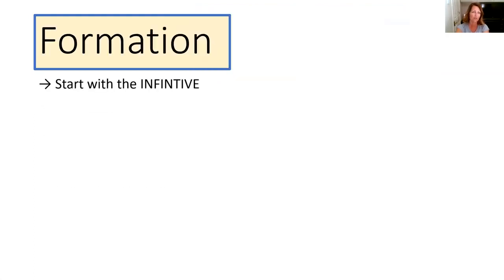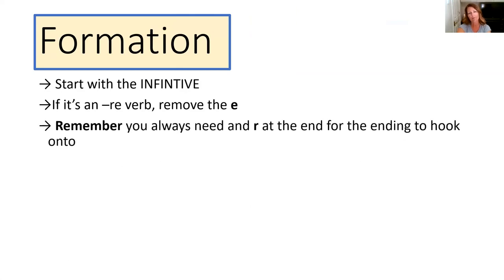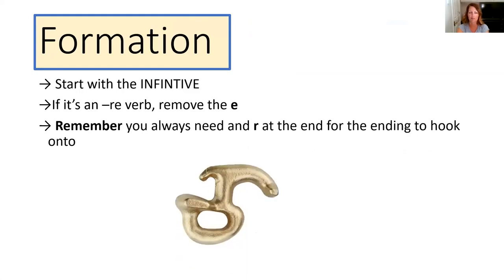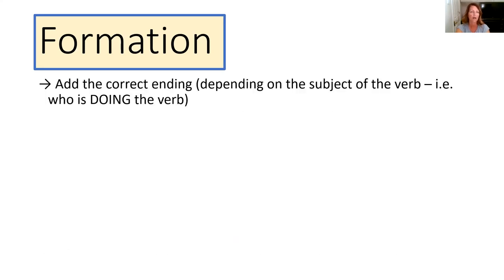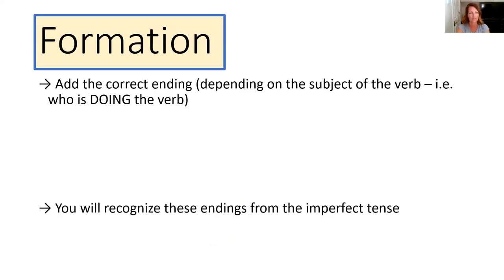So the formation: you start with the infinitive of the verb, and if it's an RE verb you have to remember to remove the E first. You always have to remember that you need an R at the end for the ending to hook onto in this conditional tense. There's a little picture of an R hook to remind you that you have to have that R on the end for a conditional ending to hook onto, to make that 'would' construction. Then you add the correct ending depending on the subject — who is doing the verb, who you're saying 'would do' whatever it is.